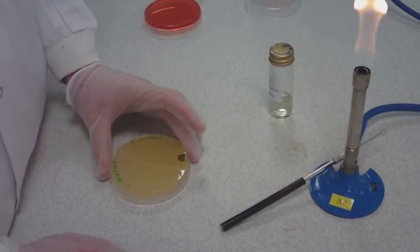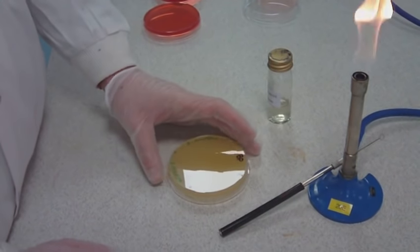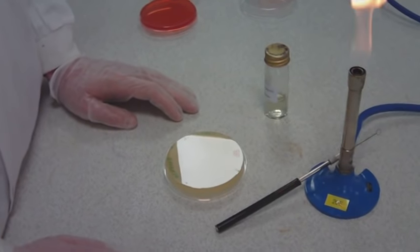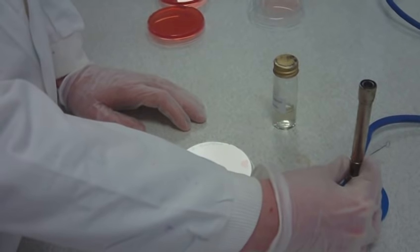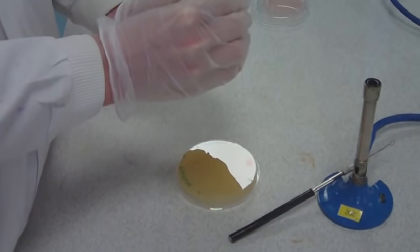Place the inverted plate close to the Bunsen burner to reduce chances of contamination. Turn on the Bunsen burner. Loosen the cap of the bottle containing the inoculum.